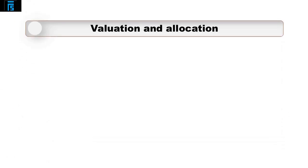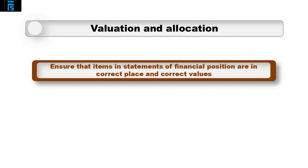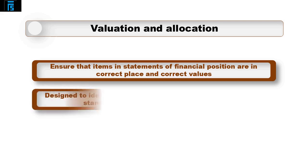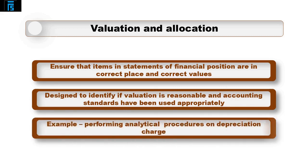The valuation and allocation assertion is to ensure that items in the statement of financial position are in the correct place and at the correct values. Audit tests are designed to identify if the valuation is reasonable and if accounting standards have been used appropriately. An example would be performing analytical procedures on the depreciation charge for non-current assets, comparing the treatment to previous years and industry methods.